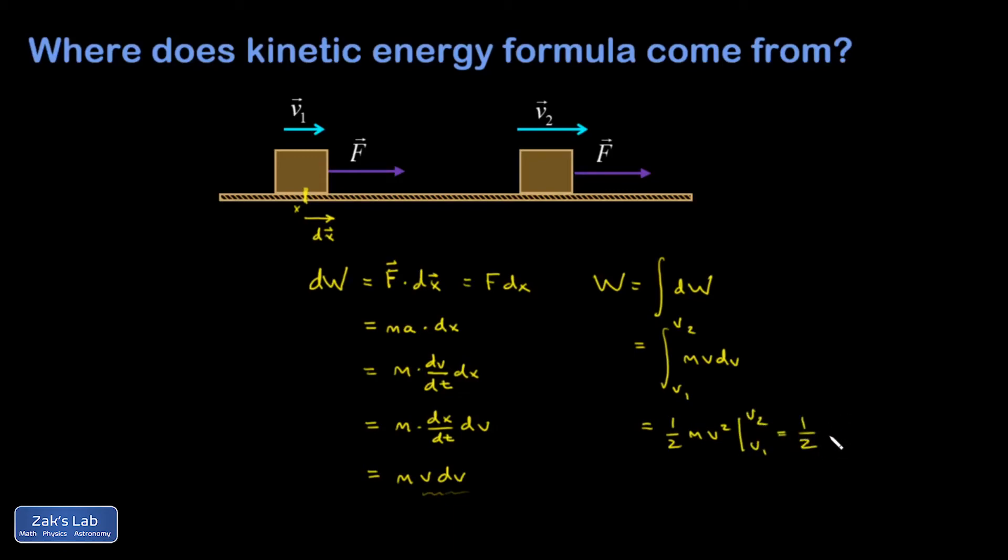Which is just one-half mv2 squared minus one-half mv1 squared, which should be familiar at this point. So what we're going to do is say, let's define a quantity called kinetic energy to be one-half mv squared.